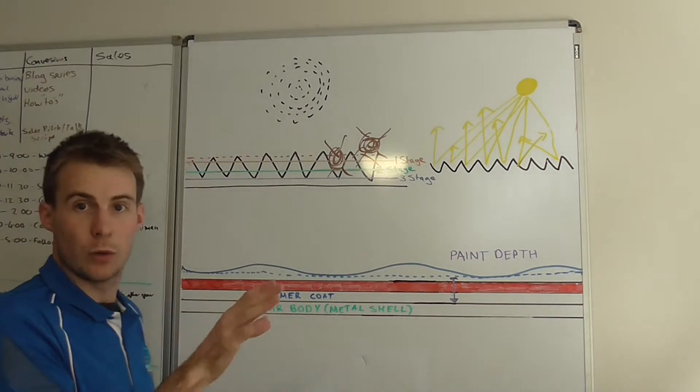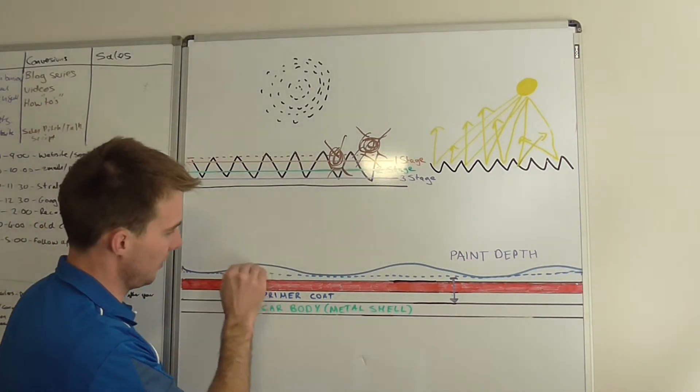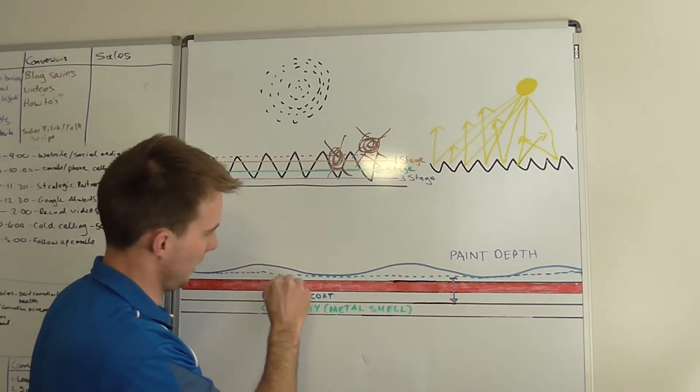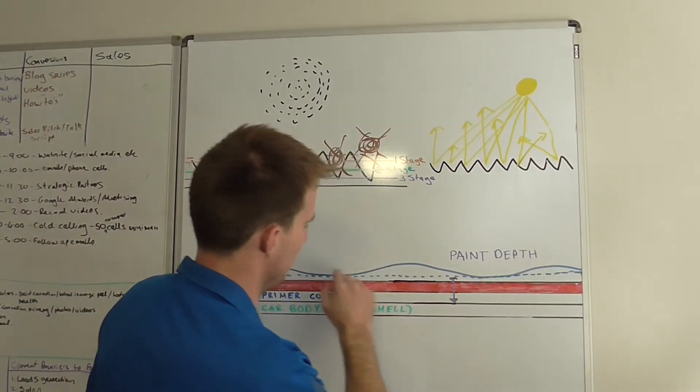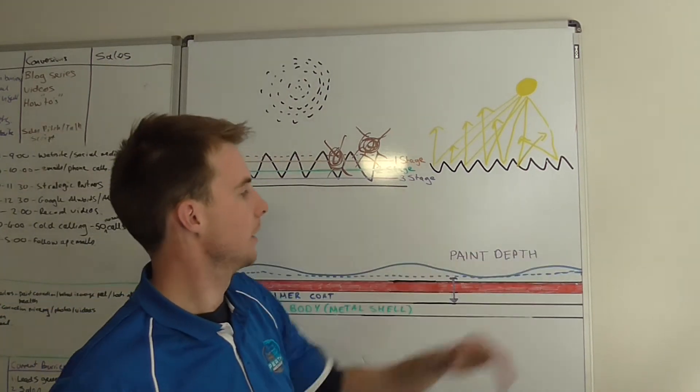So professional detailers will basically be sanding this down to get it to this line here, to get it to that line there. So sanding across.